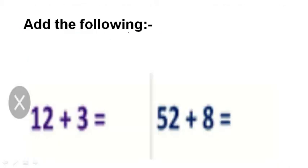Add the following. Now we have to make oral counting. Twelve — after thirteen, fourteen, and fifteen. We should write fifteen. This is fifty-two plus eight. Fifty-two — after fifty-three, fifty-four, fifty-five, fifty-six, fifty-seven, fifty-eight, fifty-nine, and sixty. We get number sixty.